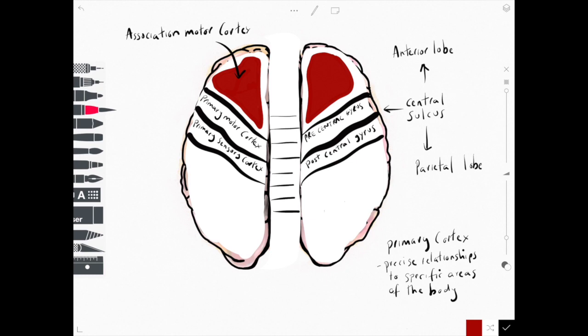This particular area is called the pre-motor cortex and it's involved in visual cues that guide movement and therefore it has connections with the cerebellum.